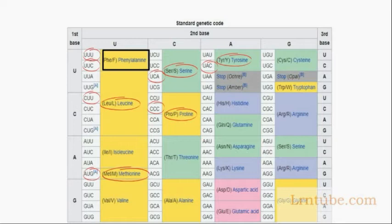The four nucleotides are uracil, cytosine, adenosine, and guanine. A codon must have three letters and represent a particular amino acid.